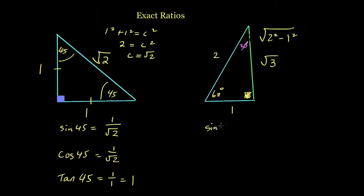So sin 60 is opposite over hypotenuse, so that's the square root of 3 over 2. If you type sin 60 into a calculator, you'll get 0.866 as an irrational number. And over here on the right, the square root of 3 over 2 will also give you that same value. Cos 60 is adjacent over hypotenuse, so that's going to be 1 over 2. Tan 60, tan is opposite over adjacent, so you're going to get the square root of 3 over 1, or you could just write that as the square root of 3.